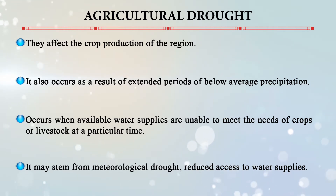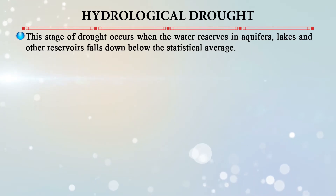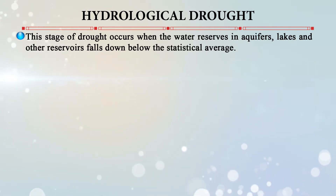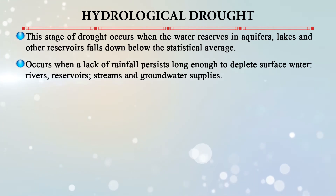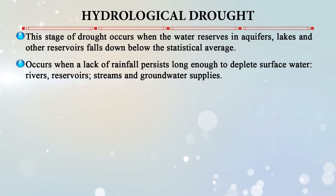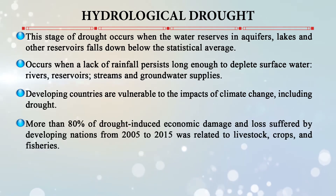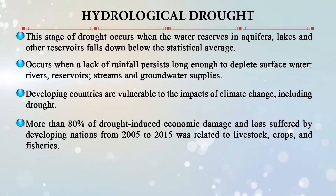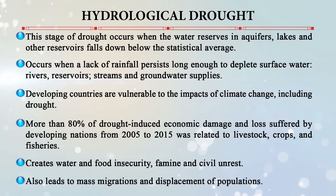The third stage is hydrological drought. When water reserves in aquifers, lakes, and other reservoirs fall below the statistical average, this drought occurs. It can also occur when lack of rainfall persists long enough to deplete surface water — rivers, reservoirs, streams, and groundwater. Developing countries are especially vulnerable: 80% of drought-induced economic damage suffered by developing countries from 2005 to 2015 was related to livestock, crops, and fisheries. Drought creates water and food insecurity, famine, and civil unrest, leading to mass migrations.